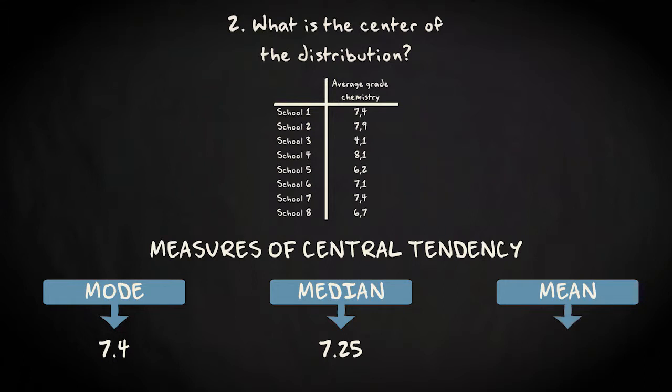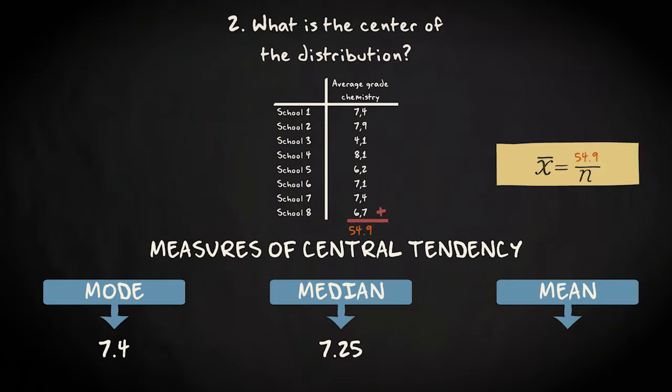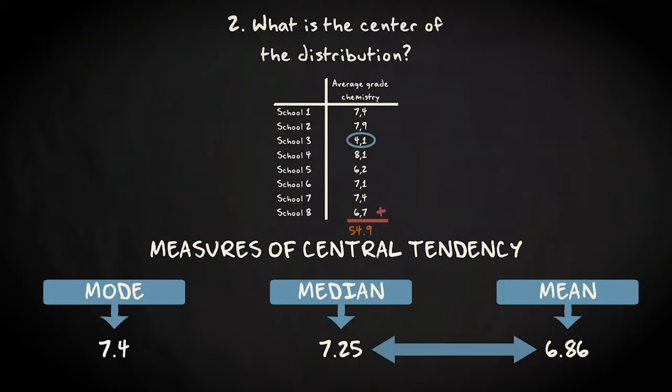To compute the mean, we use this formula. First, we add up all values and then we divide that outcome by the size of our sample. That makes 54.9 divided by eight equals 6.86. This shows you that the relatively extreme score of school three here causes the mean to be lower than the median.